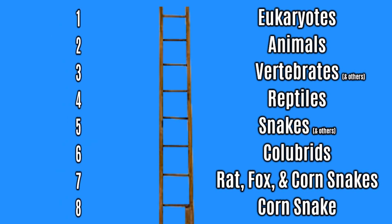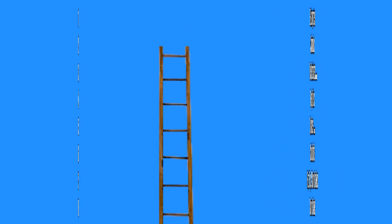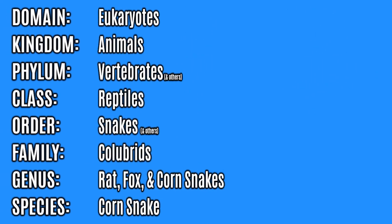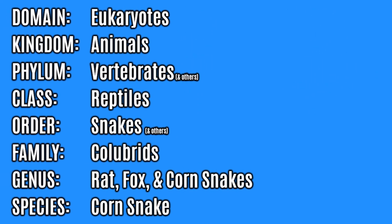You could equally though have just labelled them numerically. Then for any given organism, we can allocate names to each rung, and immediately know the correct sequence.